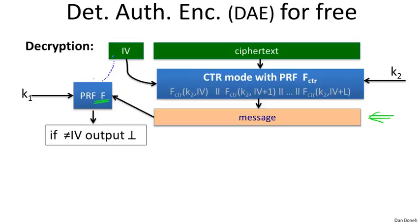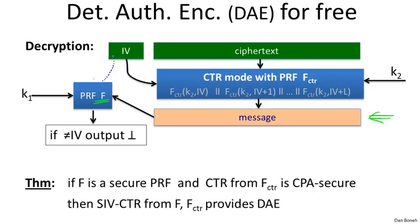This is a very simple built-in check to ensure the ciphertext is valid: after decryption, we re-derive the IV and verify it matches the IV given in the ciphertext. If not, we reject the message. I claim this simple decryption check is enough to provide ciphertext integrity, and therefore deterministic authenticated encryption. We can state this as a theorem: if F is a secure PRF and counter mode derived from F_CTR is CPA secure, then the result is a deterministic authenticated encryption system. We already argued deterministic CPA security, so all we have to argue is ciphertext integrity.